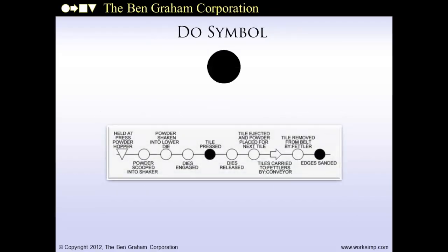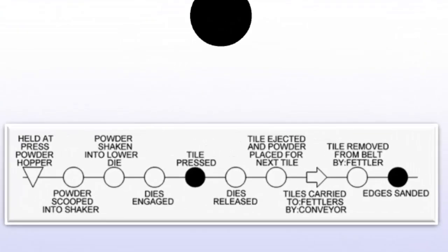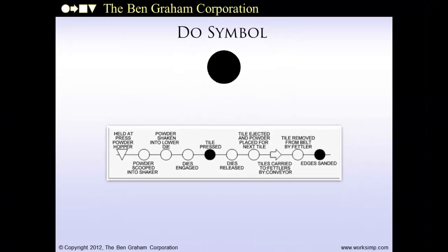The do symbol is represented with a solid circle. It is used in manufacturing processes and represents a physical change to a product, showing value added in production processes. It is not used in information flows. This process map snippet is from a ceramics factory, with two do symbols representing tiles being pressed and the edges of the tiles being sanded. Although do steps are critical to throughput, they typically account for a very small percentage of processing time.